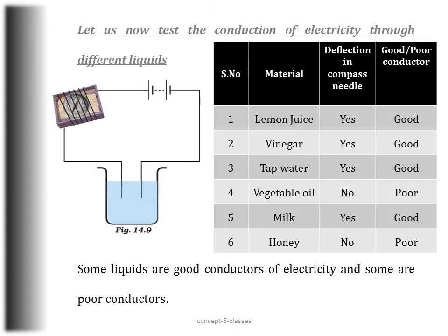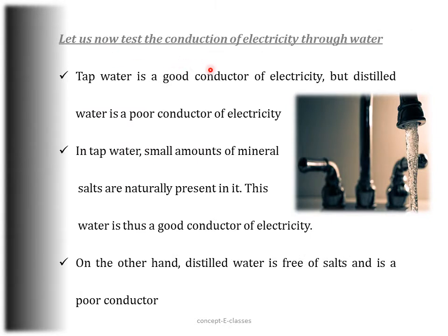From this, we can say that some liquids are good conductors of electricity and some are poor conductors. Under certain conditions most materials can conduct electricity, so it is preferable to classify materials as good conductors and poor conductors rather than as conductors and insulators. Now, tap water is a good conductor of electricity but distilled water is a poor conductor — let's see why.